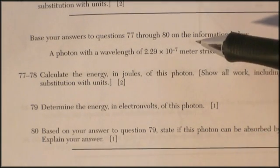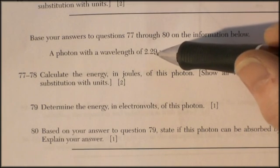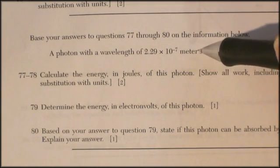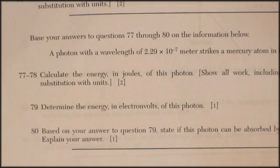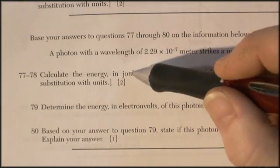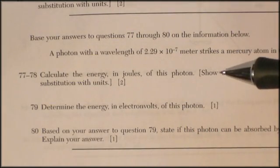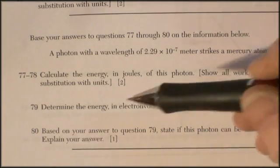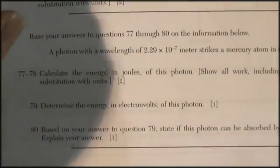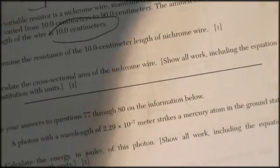A photon with a wavelength of 2.29 times 10 to the negative 7 meters strikes a mercury atom in the ground state. Calculate the energy in joules of this photon. Show all work including the equation and substitution with units. Well, as I've been trying to do, let's list what we know.